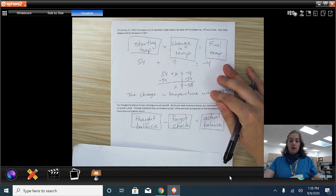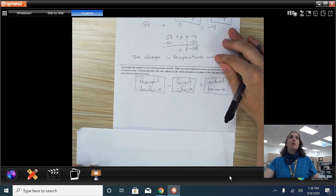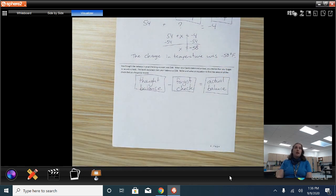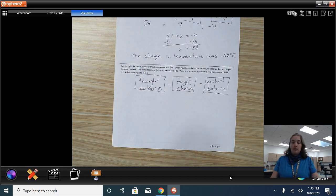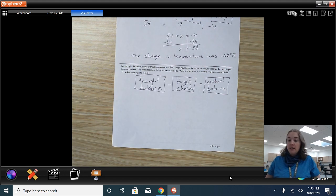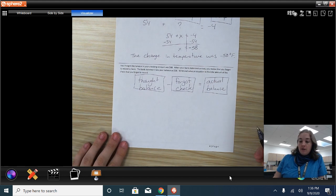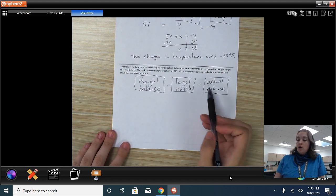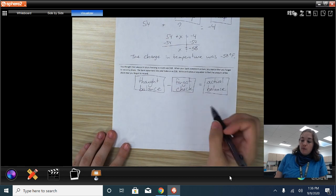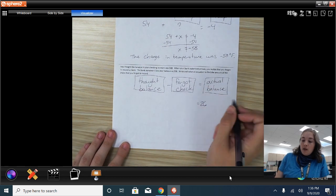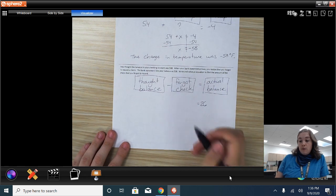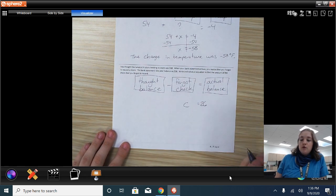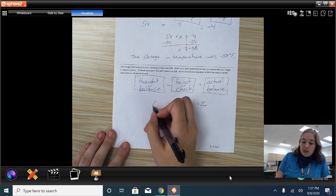The last one is also a word problem. You thought the balance in your checking account was $68. When your bank statement arrives, you realize that you forgot to record a check. Happens to me sometimes. The bank statement lists your actual balance as $26. So write and solve an equation to find the amount of the check that you forgot to record. So our actual balance we know is $26. We don't know how much the check was that we forgot. I'm going to use C for a forgotten check. And we thought the balance was $68.